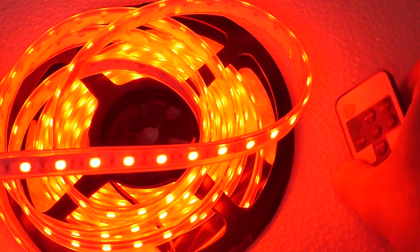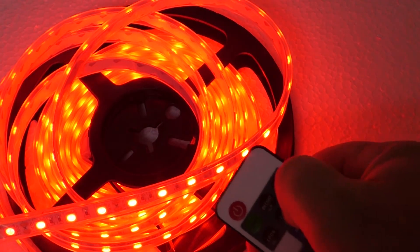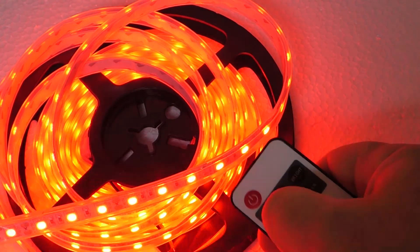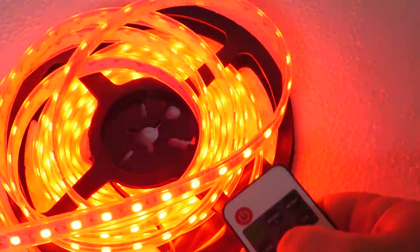The strip comes with an RF remote control that you can use to dim the light or make it flash. You can also slow down the flash.